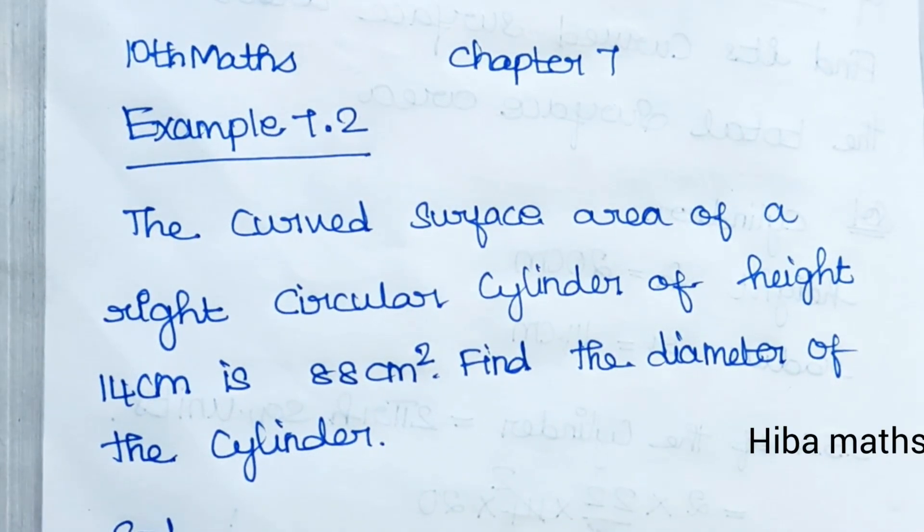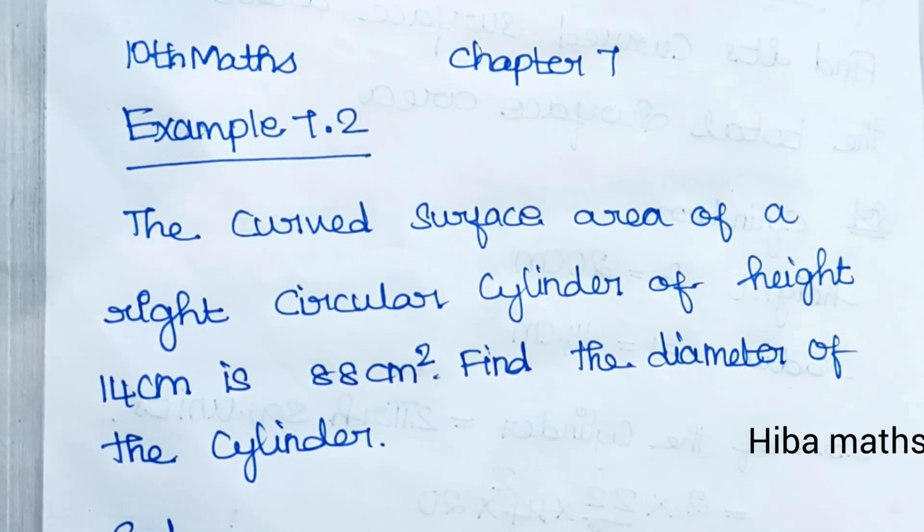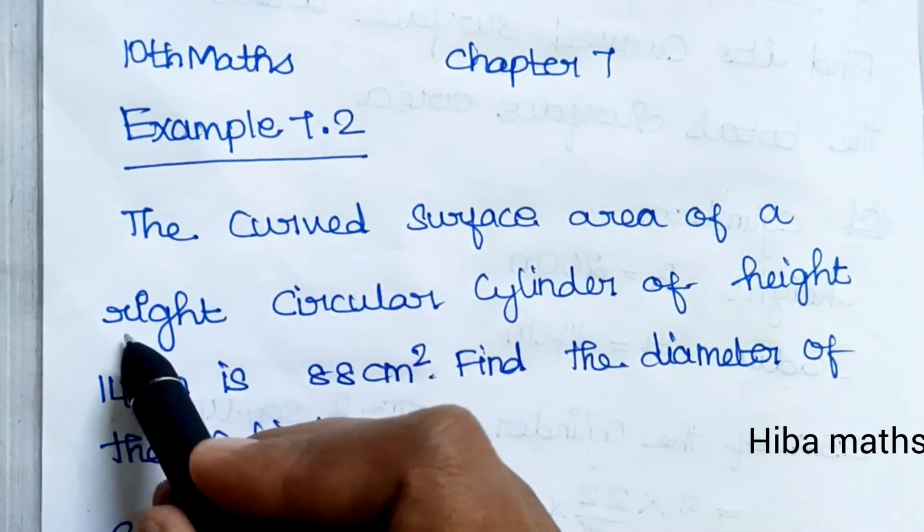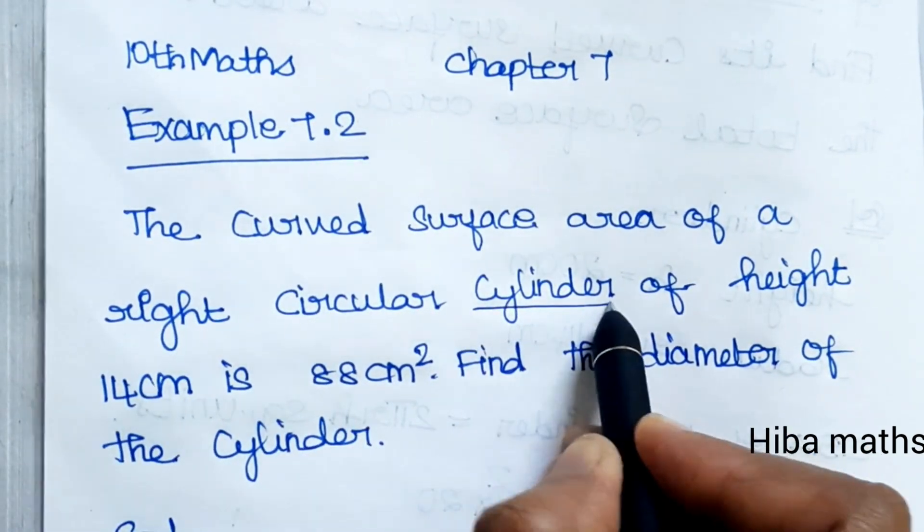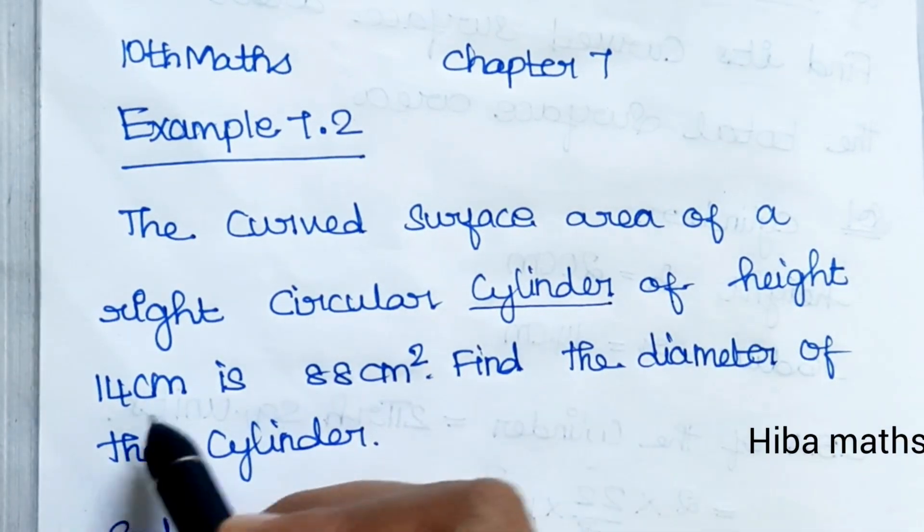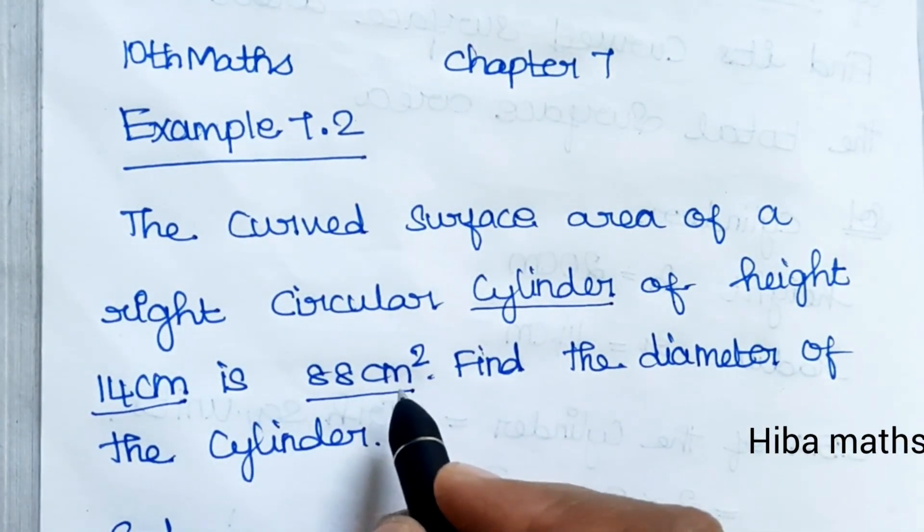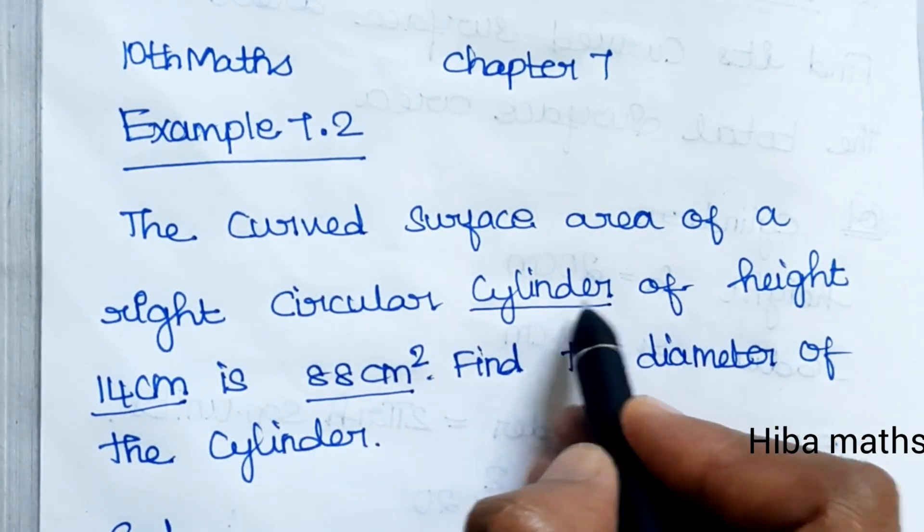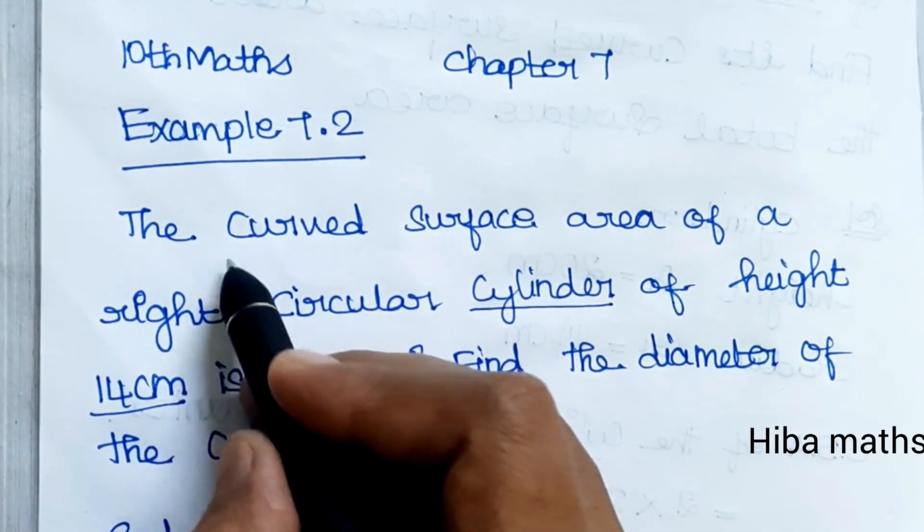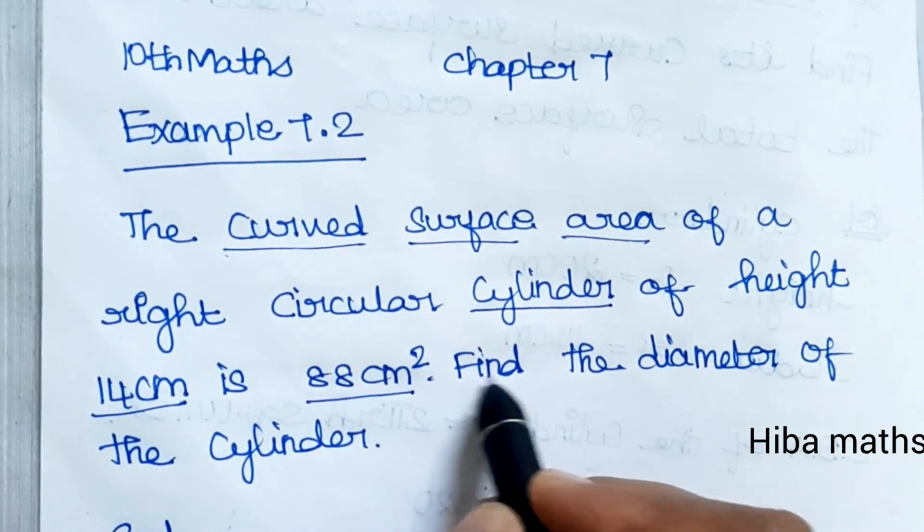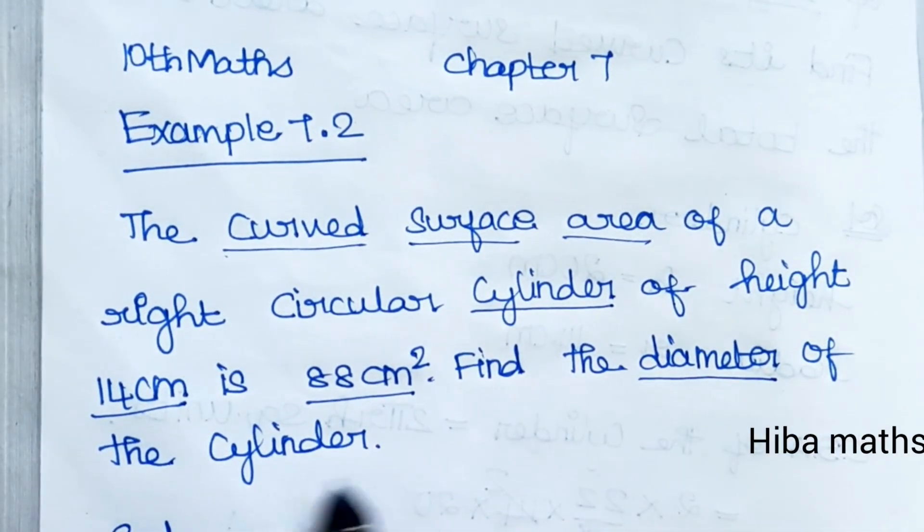Hello students, welcome to Hiba Maths, 10th standard maths, chapter 7, example 7.2. The curved surface area of a right circular cylinder of height 14 cm is 88 cm². Find the diameter of the cylinder.